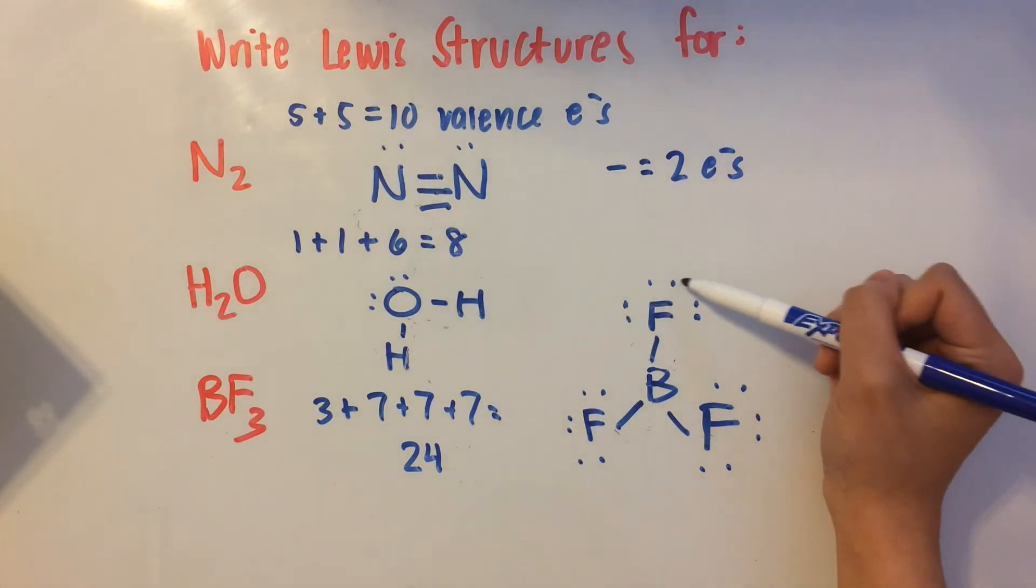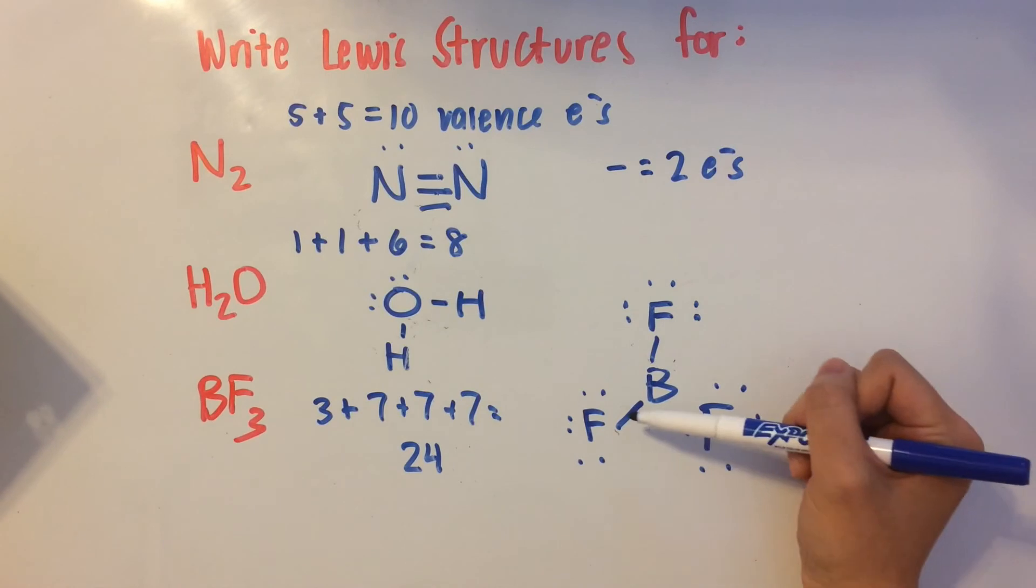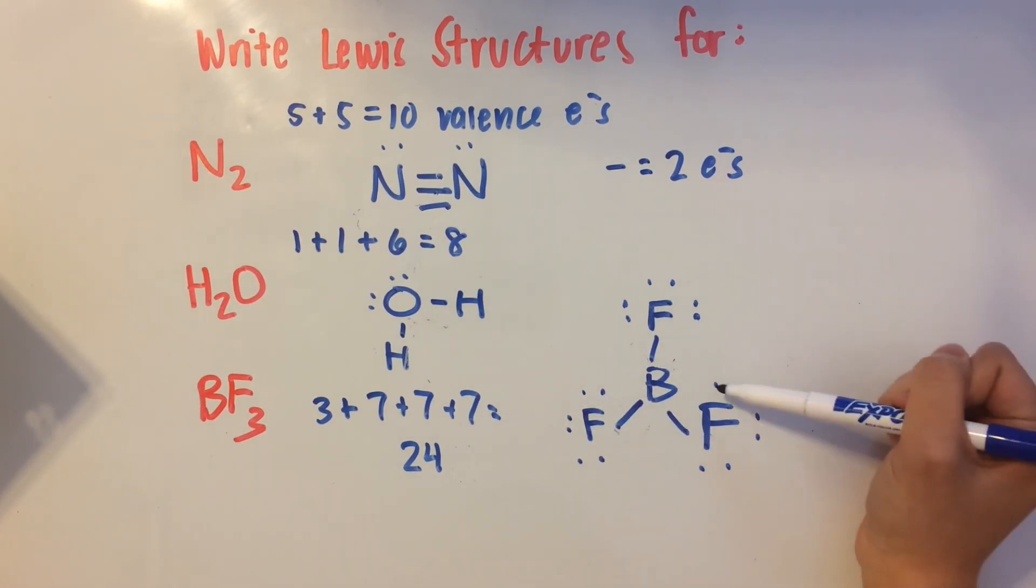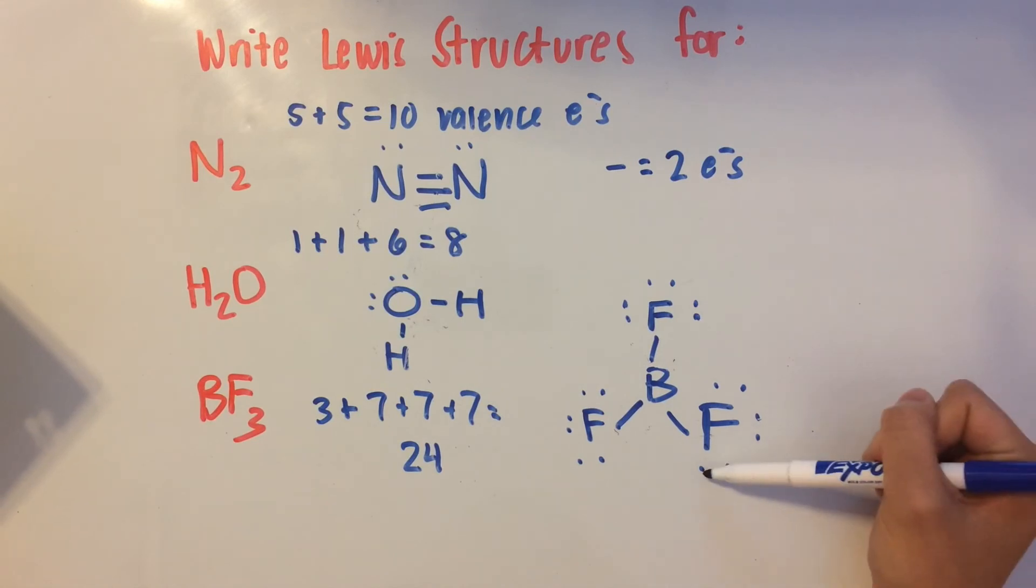So let's count. One, two, three, four, five, six, seven, eight, nine, ten, eleven, twelve, thirteen, fourteen, fifteen, sixteen, seventeen, eighteen, nineteen, twenty, twenty-one, twenty-two, twenty-three, and twenty-four. So we're all good to go.